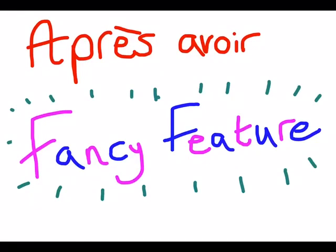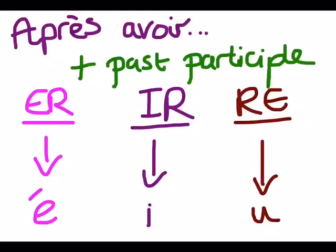In this video I'm going to explain how you use the fancy feature après avoir in French. This is a really good construction to use because it counts as complex language, so it will gain you extra marks. It's quite a simple rule to learn. You simply need to use après avoir, which translates as 'after having', and then you need the past participle form of the verb.